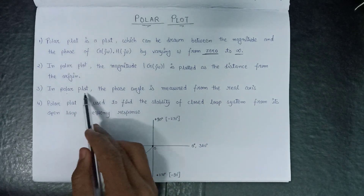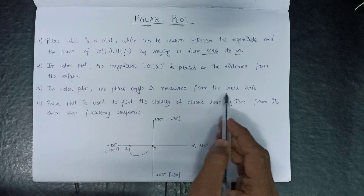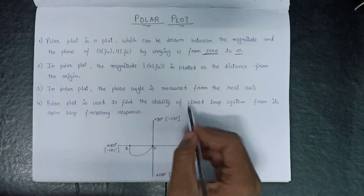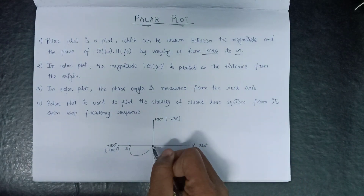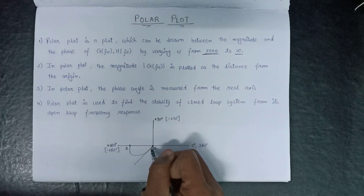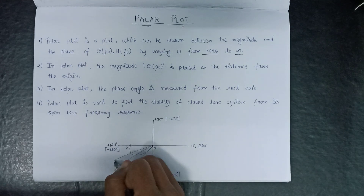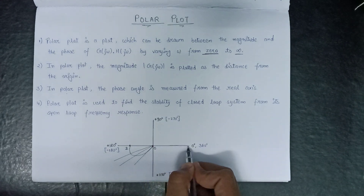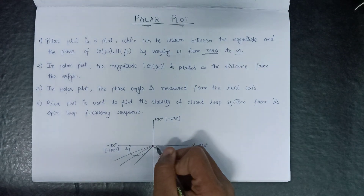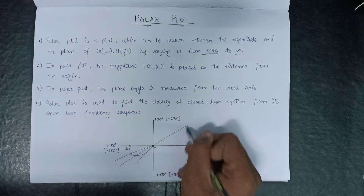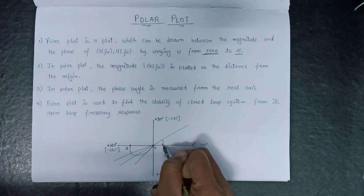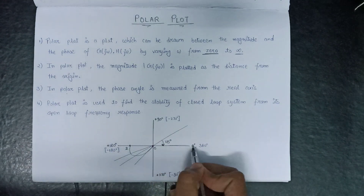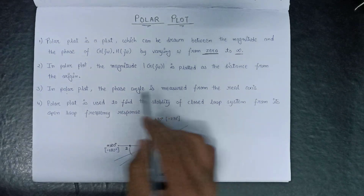Moving on to the next point: in the polar plot, the phase angle is always measured with respect to the real axis. So if we have different angles in the third quadrant, the angle will always be measured with respect to this real axis. For example, if we want to plot 45 degrees, we plot it and take a reference from this real axis — that is, this is the 45 degree angle.